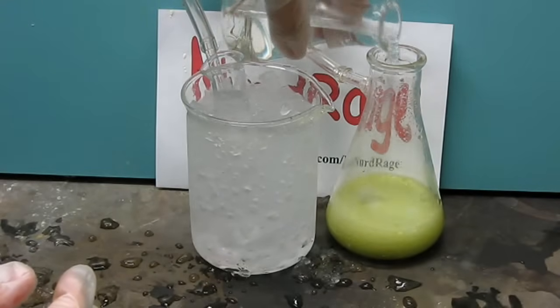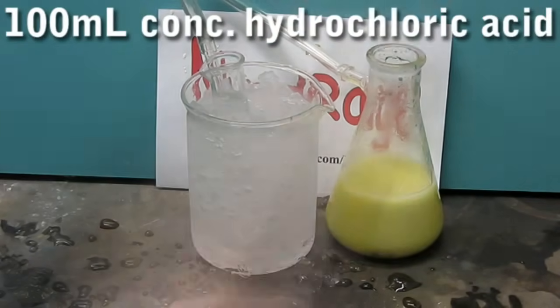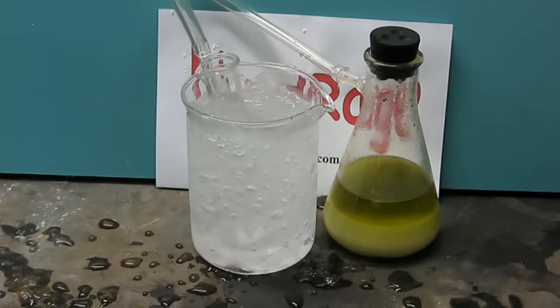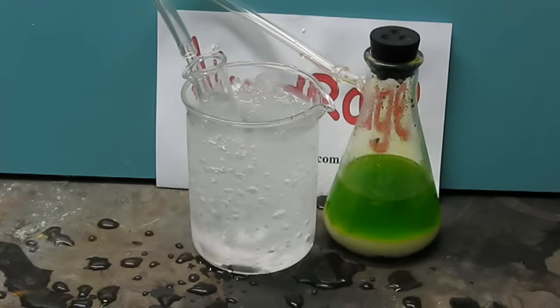When you're ready to start pour 100 milliliters of hydrochloric acid into the gas generator and stopper it off. And there goes the reaction. This took about an hour to finish so we'll skip ahead.